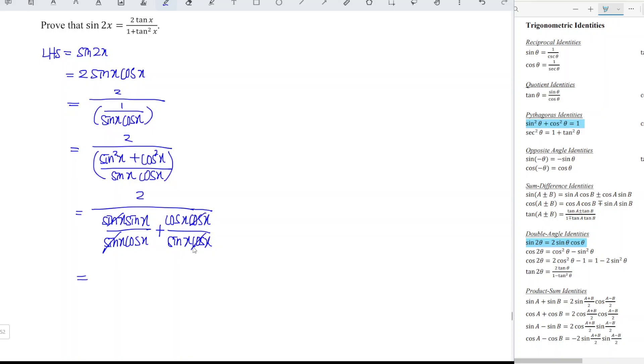So which means that we have 2 over, sine over cos is tangent. Cos over sine is 1 over tangent. So which means that we should have left-hand side is equal to standardize the denominator. So we have 2 over tangent squared x plus 1 over tangent x.